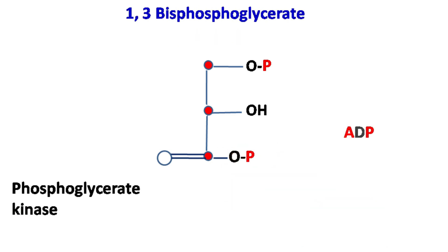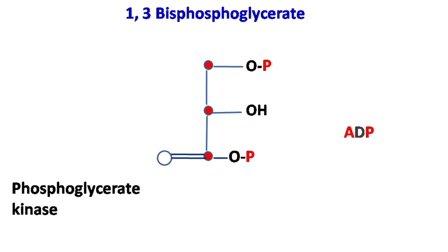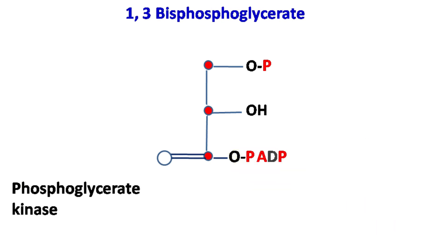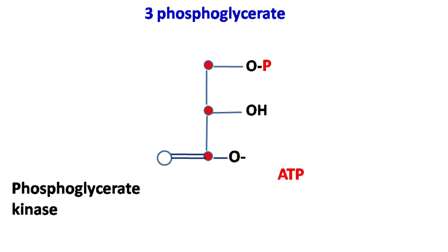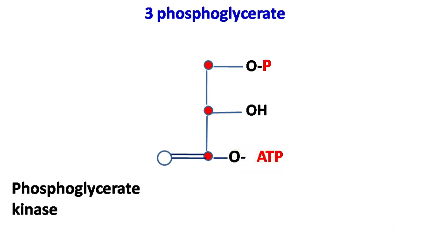In the next step, 1,3-bisphosphoglycerate donates its phosphate to ADP to form ATP, and the enzyme involved in this reaction is phosphoglycerate kinase.